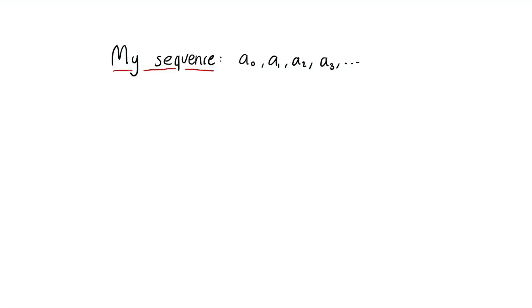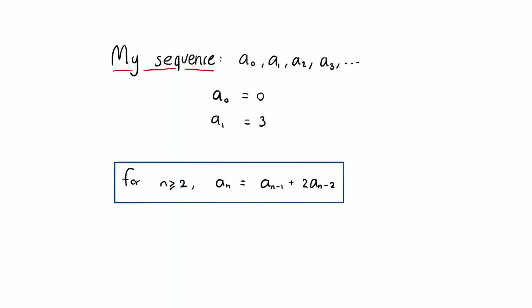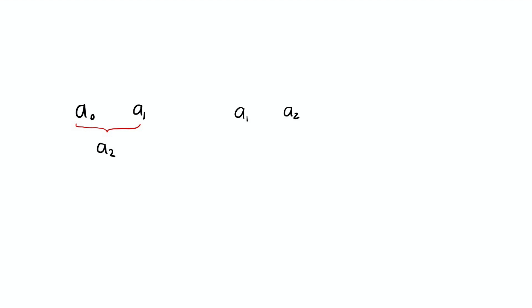So suppose I have this sequence: a₀, a₁, all the way to infinity. a₀ is defined to be 0, a₁ is defined to be 3, and for anything afterward — a₂, a₃, a₄ — I define recursively. If n is at least 2, aₙ will be aₙ₋₁ plus twice of aₙ₋₂. With that, you learn a₂ from a₁ and a₀, you learn a₃ from a₂ and a₁, you learn a₄ from a₃ and a₂, so on and so forth.